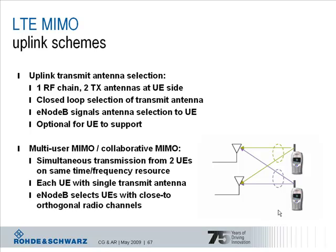You can imagine that the scheme only works in certain radio conditions, so it is really up to the base station to evaluate that carefully. Multi-user MIMO enhances the capacity because you exploit the radio resource twice by sending different UEs over these radio resources — the users share the same radio resources. The base station has to distinguish the users, and that is done by different reference signals that are assigned for the different UEs.